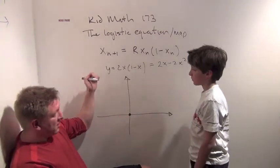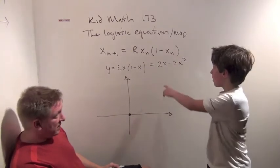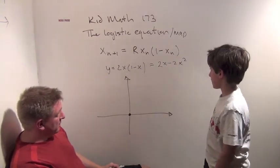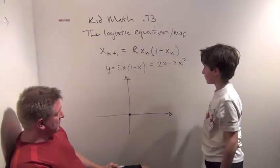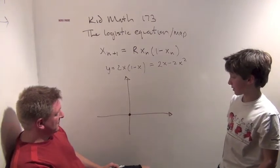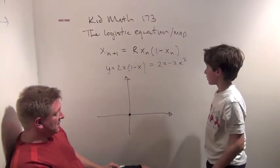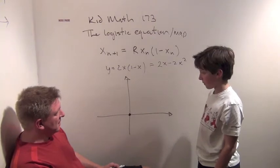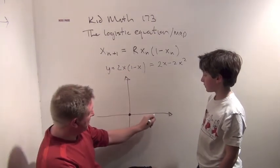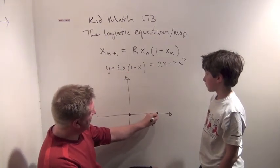And what's the other x value that makes this 0? Well, you pull an x out and you get x times 2 minus 2x. So 2x, x is 1. So just like we had here, I have the two roots here.